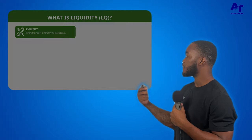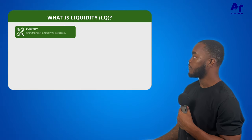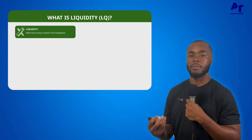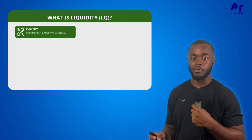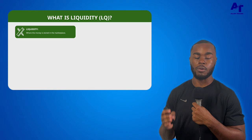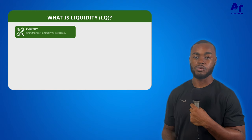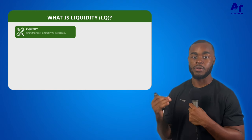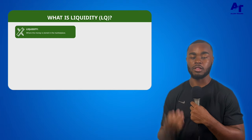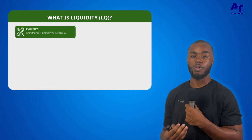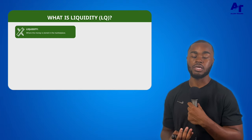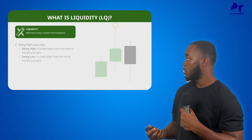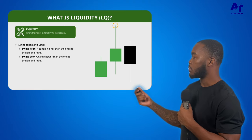The first type of key level is liquidity. It is simply where the money is stored — where orders are at. Either people's entry orders, people's stop losses, or people's take profits are at liquidity. The market is always going to seek liquidity. On a chart, we see that in the form of swing highs and swing lows.